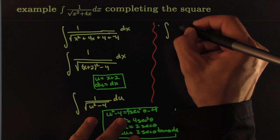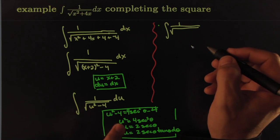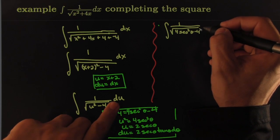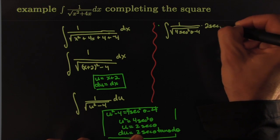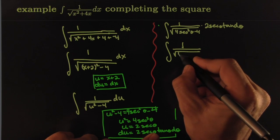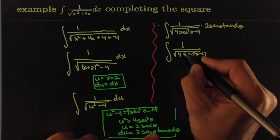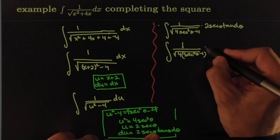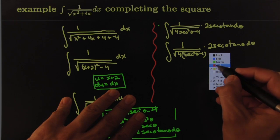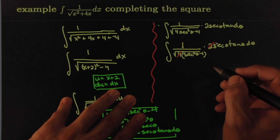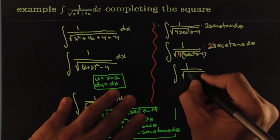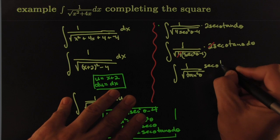Substituting in, the integral becomes 1 over √(4 sec²θ − 4) times the differential du = 2 secθ tanθ dθ. The denominator factors as √(4(sec²θ − 1)). We pull out the 4 — that becomes a 2 which cancels. The crucial step is turning that into a monomial: √(tan²θ), which is easy to handle.